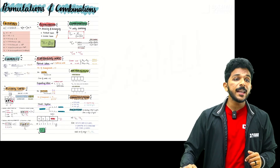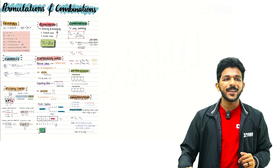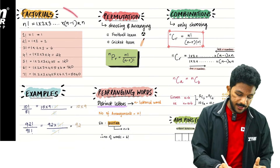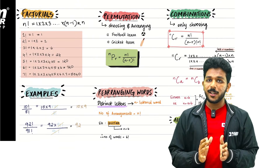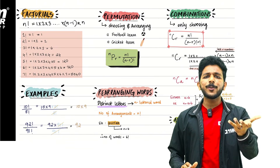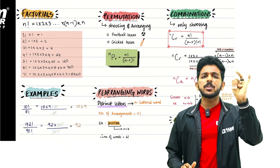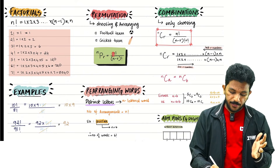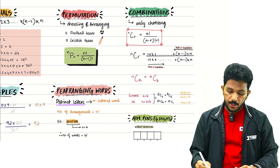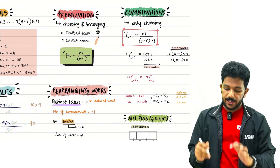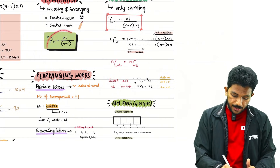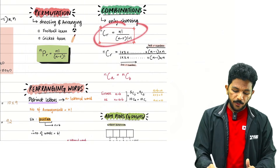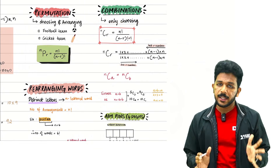Next, permutation and combination. Factorial means natural numbers multiplied together — 5 factorial is 1×2×3×4×5. Permutation is choosing and arranging: nPr = n! divided by (n minus r)!. Combination is choosing only: nCr involves division by r factorial.